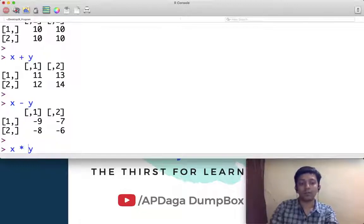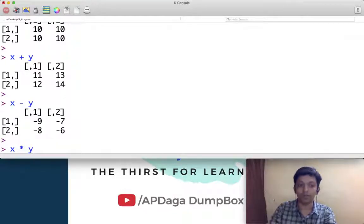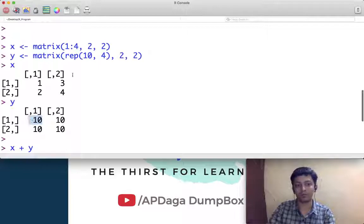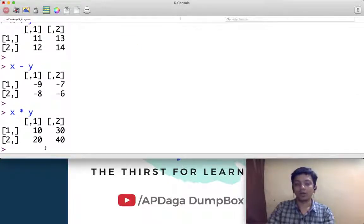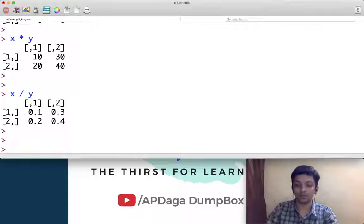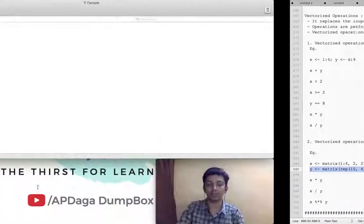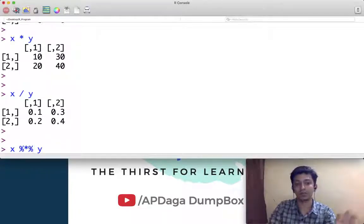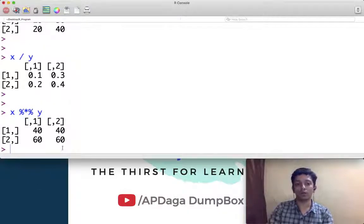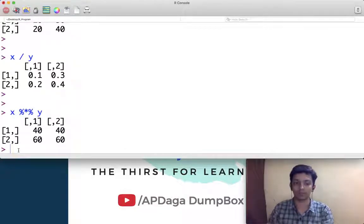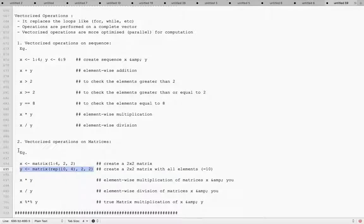Now the tricky part: if I am doing multiplication over here, many of you might think it is matrix multiplication, but it is not. It is just element-wise multiplication. First element of x is getting multiplied by first element of y and so on. Same goes with division, it is element-wise division. Then the next question is what if you want to perform matrix multiplication, which we call true matrix multiplication? The syntax is a little bit different: instead of just putting star, you have to put percent star percent. Now whatever you got is a true matrix multiplication, it is not element-wise multiplication.